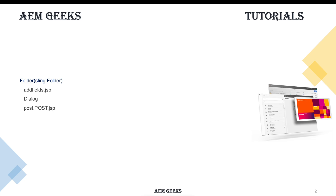The first one, addfields.jsp, is optional. If you have some additional fields you want submitted along with the form submission, you can write those in addfields.jsp. For example, if you need some hidden fields — data which is not part of your form but you always want submitted with your form — that kind of field you can add in addfields.jsp. Most probably these are hidden fields.